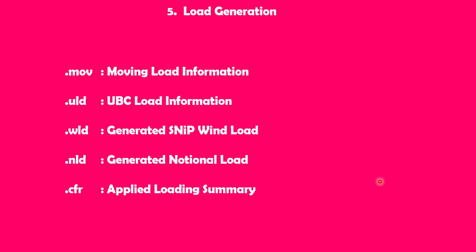Based on load generation, you have the following categories. If you have a moving load, like gantry loads, that particular moving load information will be stored in the .MOV file. For UBC load information, the file extension is .ULT.